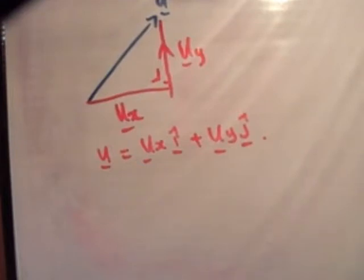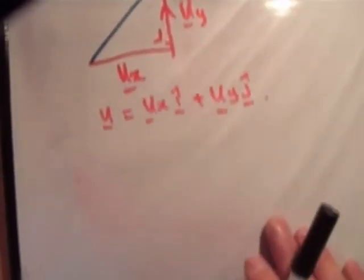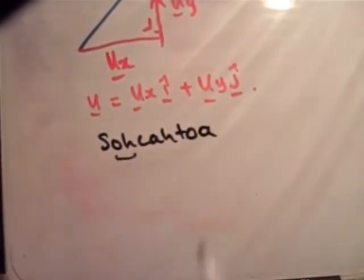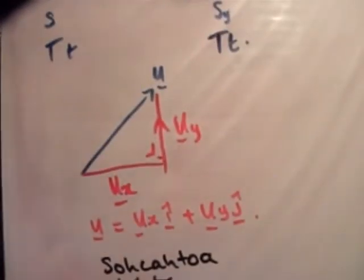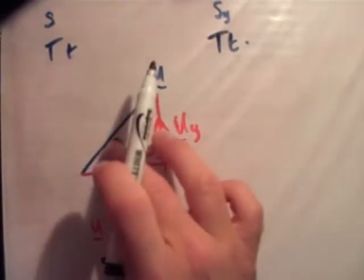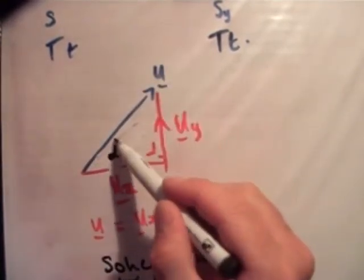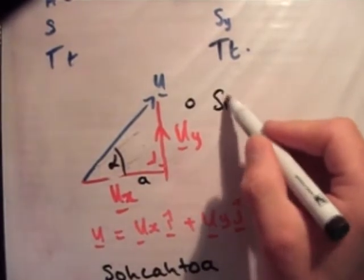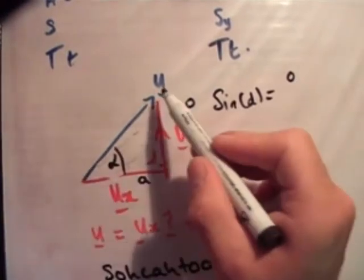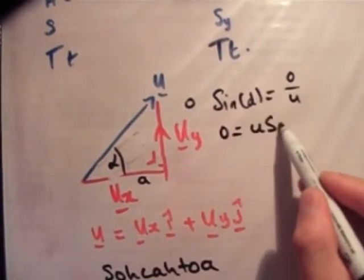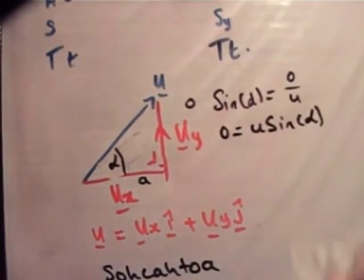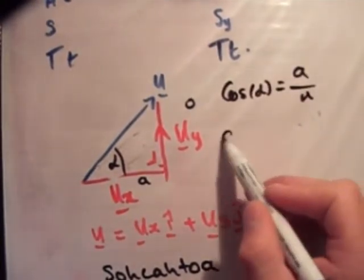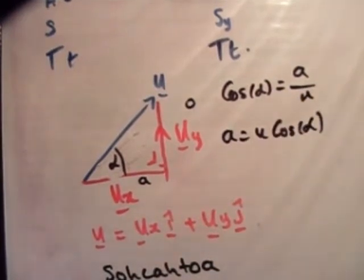Now of course we know that u is equal to u sub x i hat plus u sub y j hat, like so. Now the thing is, we need to find out exactly what u sub x and u sub y are. So for that reason, we're going to discuss sine, cosine, and tangent. So from SOHCAHTOA, we know that sine is opposite over hypotenuse, and cosine is adjacent over hypotenuse. So if we just apply that over here, we'll call this angle here alpha. So what's sine of alpha? We're just going to call this the opposite and the adjacent rather than u sub x and u sub y. Therefore sine of alpha is equal to the opposite over the hypotenuse. Now hypotenuse is equal to u. Therefore the opposite is equal to u sine alpha. That's the first thing. Similarly, if you do cosine, you'll get that cos alpha is equal to the adjacent over the hypotenuse, which is equal to u. Therefore the adjacent is equal to u cos alpha.